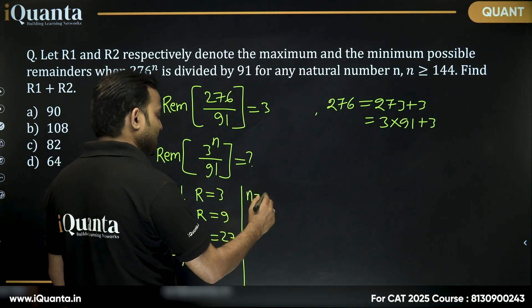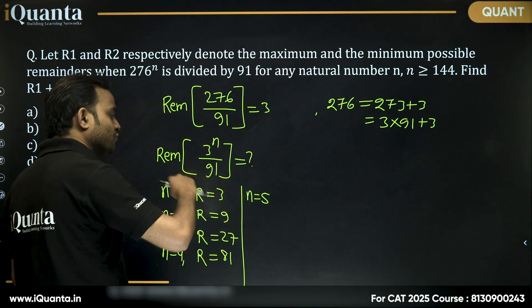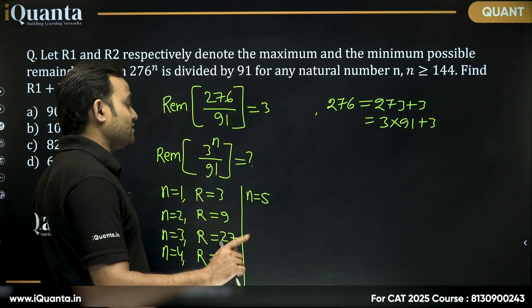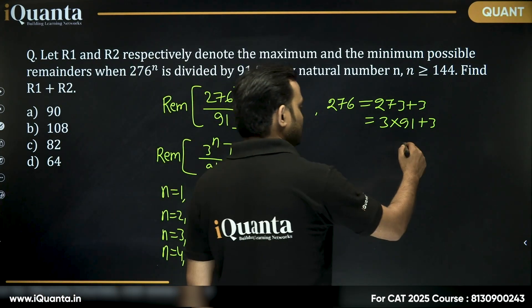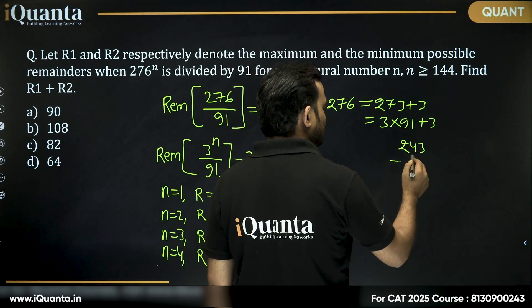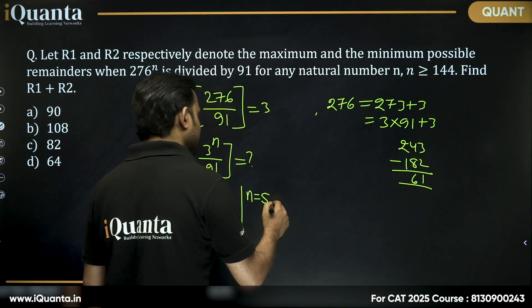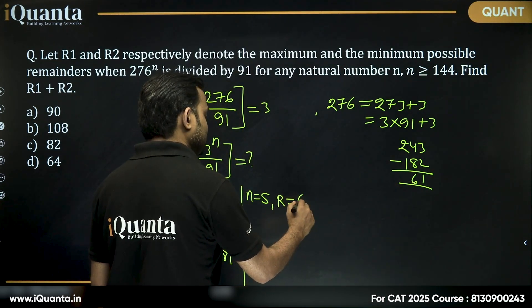Similarly, if I take n equals 5, this will become 243, and if I divide 243 by 91, so 91 into 2 is 182. What are we getting? 61. Then in that case, remainder will be 61.